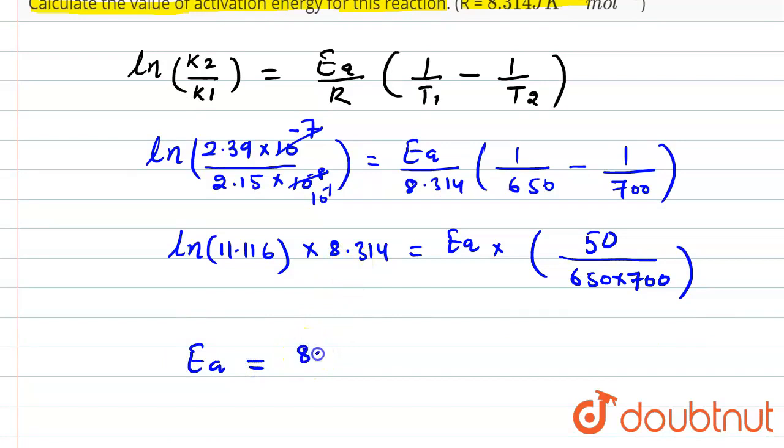now this is 8.314. Value of ln of 11.11, that will be equal to 1.046, and that is multiplied by 650 and 700, and that will be divided by 50. So divided by 50. So one zero will get canceled out here, and this will get canceled out with this one.